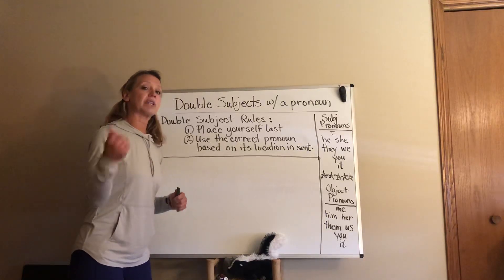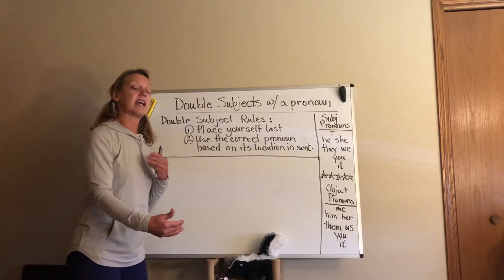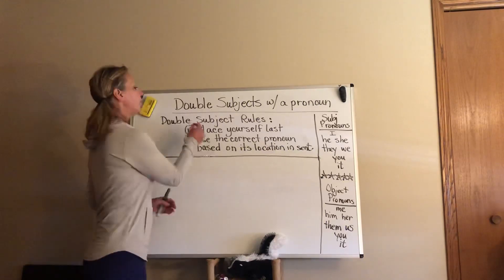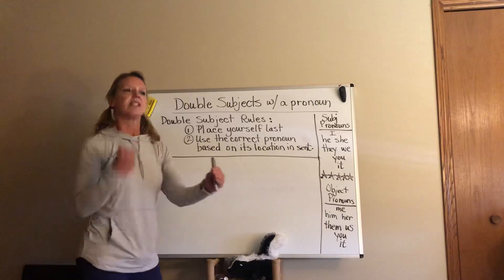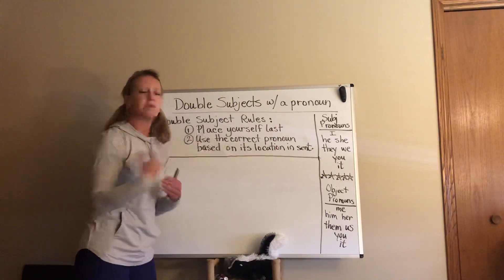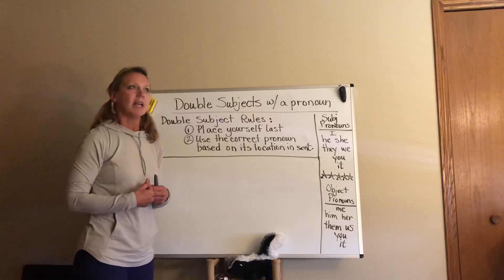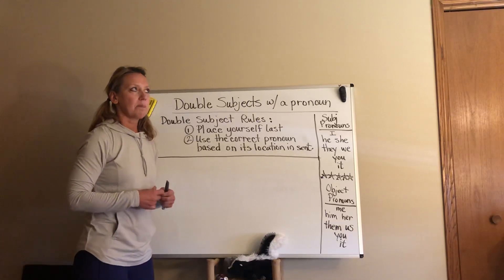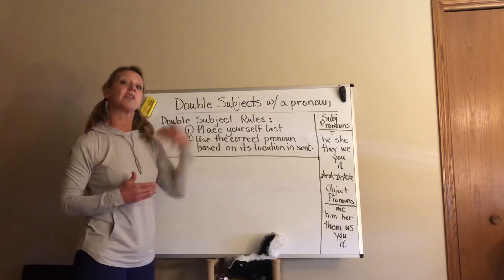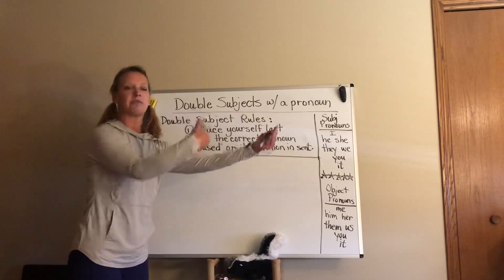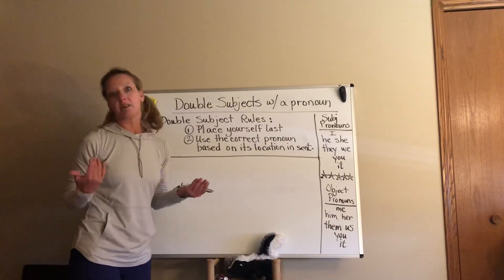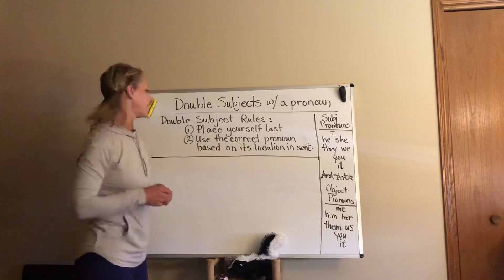There are some rules for double subjects. Rule number one: when using a double subject with a pronoun in it, as a person including yourself, always place yourself second or last in the group of people you're speaking about. It is proper manners to place yourself last and place other people before you, and therefore that is also grammatically correct.